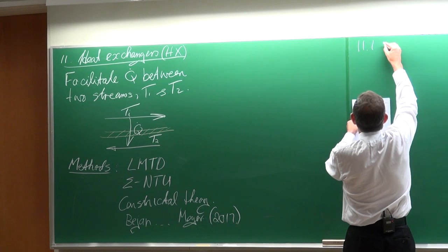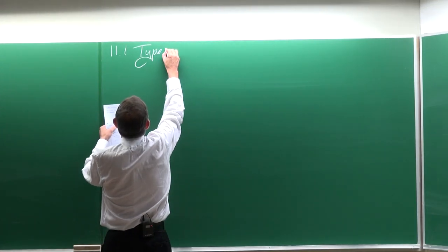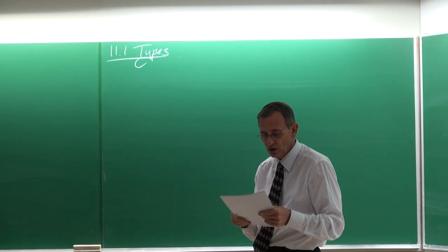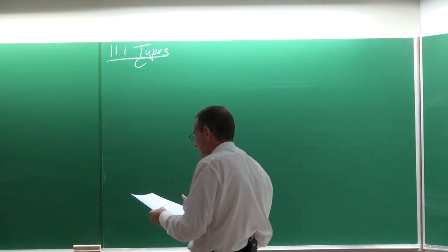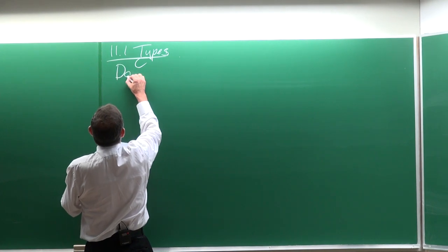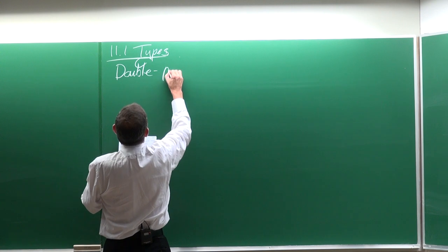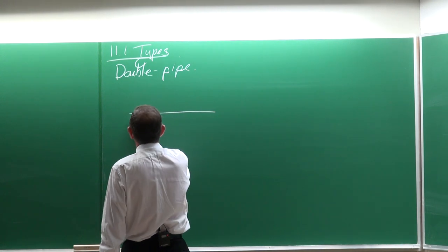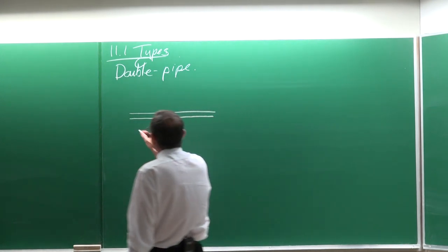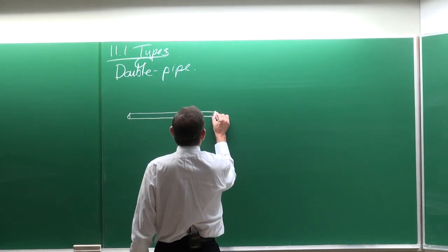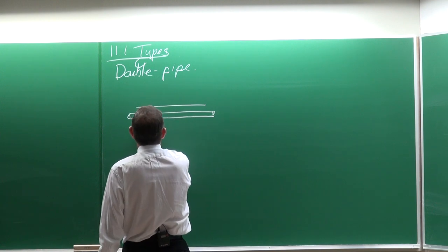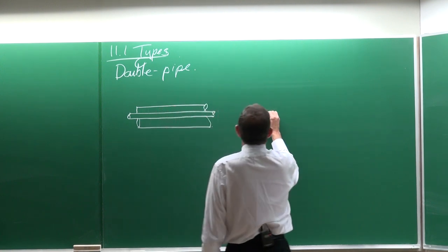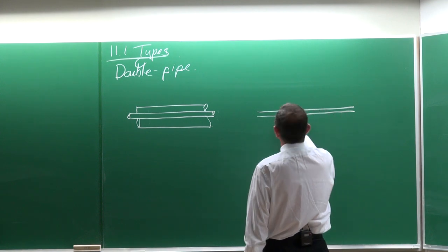In terms of types of heat exchangers, we will address most of this lecture as an introduction so you can know the different types. The first type is called the double pipe heat exchanger. A double pipe consists of one tube inside another one.